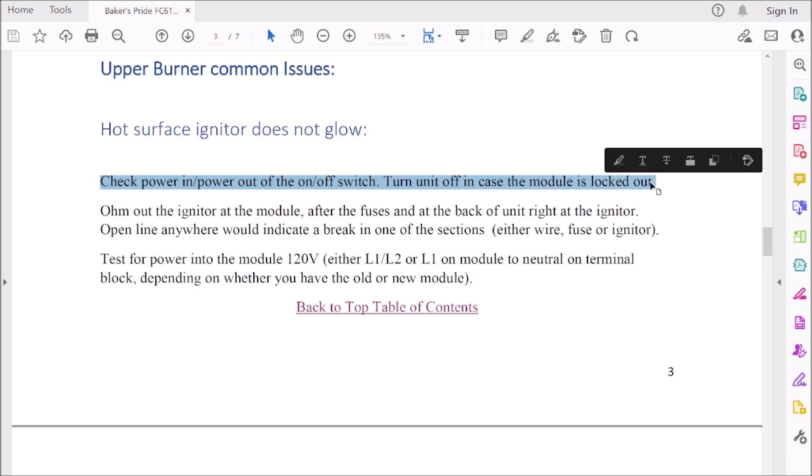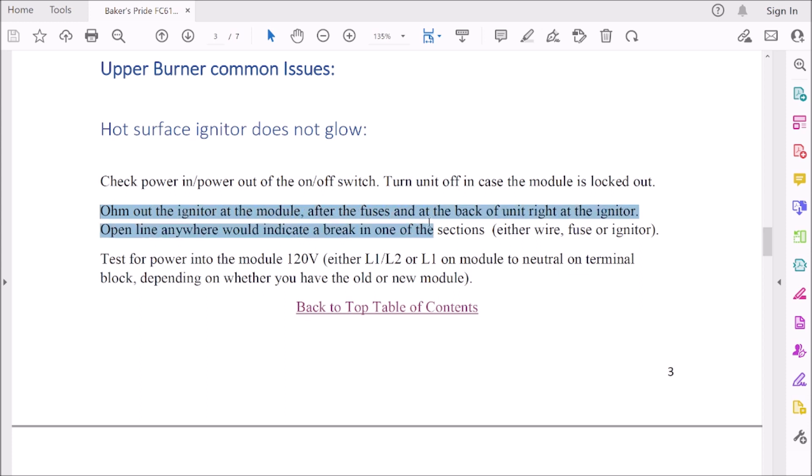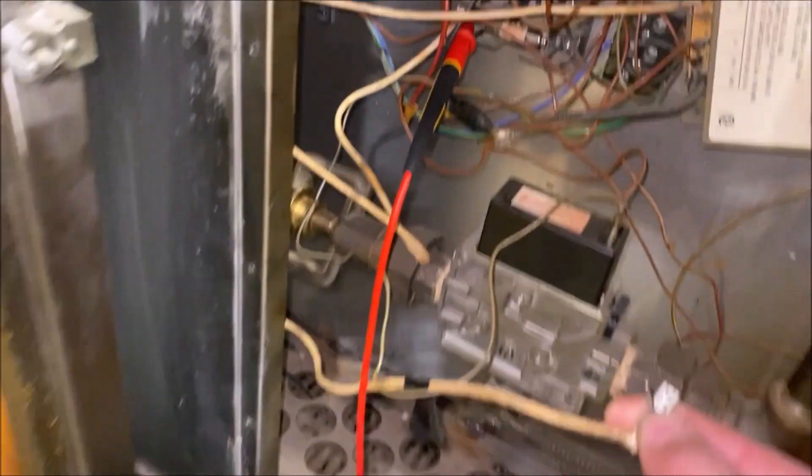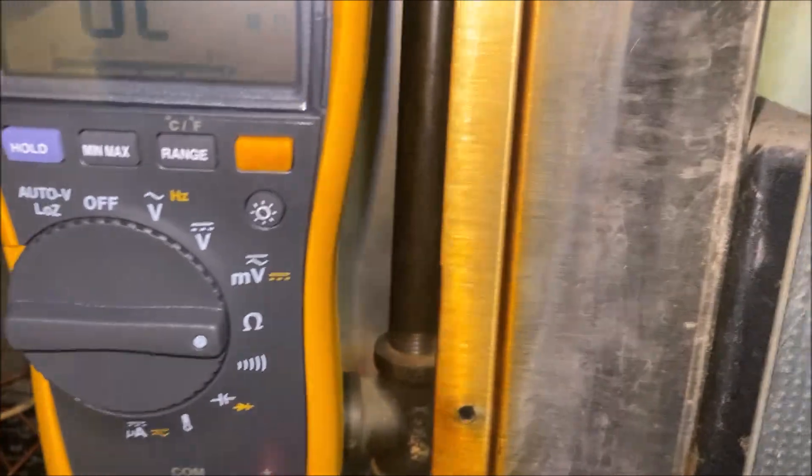Turn the unit off in case the module's locked out. We've ruled that out because we saw the light on the module. Next thing is ohm out the igniter at the module after the fuses and at the back of the unit right at the igniter. Open line anywhere would indicate a break in one of the sections: either wire, fuse, or igniter. Let's go get that tested.